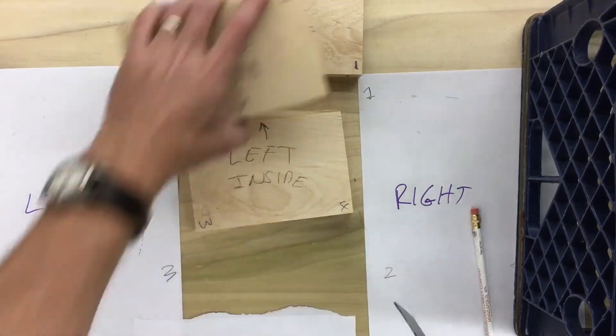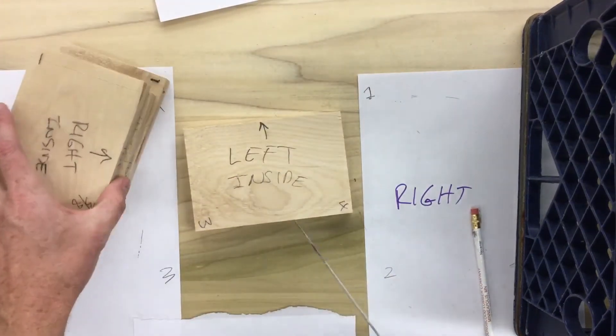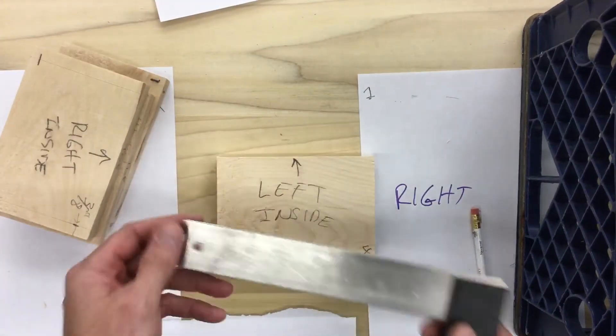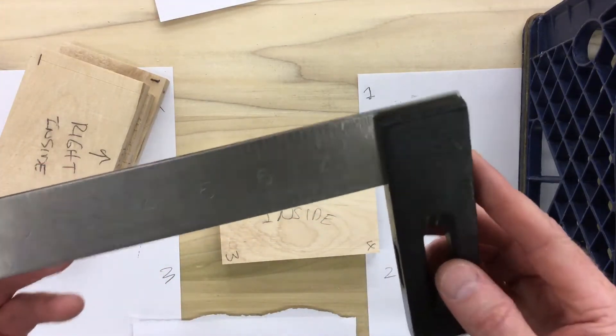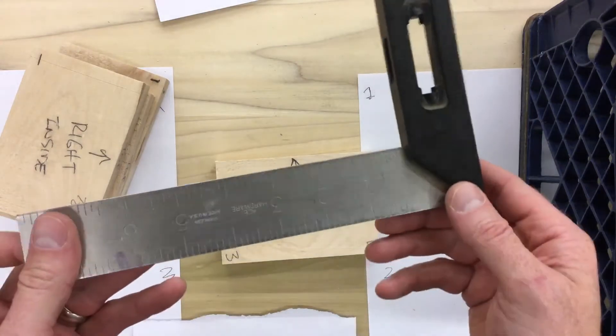I'm going to move this other stuff out of the way. I'm going to do my left side. My first step is to take this ruler here. This is called the square because this is a square corner here. It measures 90 degrees.